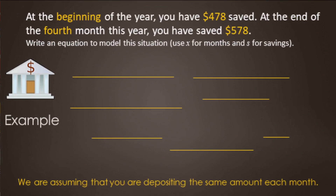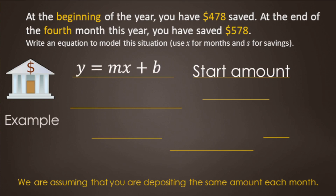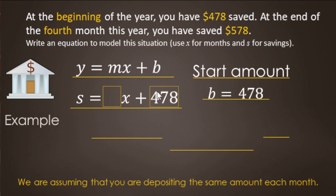We're going to be saving money and putting in the same amount each month. At the beginning of the year we have $478, and by the fourth month we have $578. We do have a start amount — start amounts and y-intercepts are basically the same thing — so we know we're going to use slope-intercept form. Here x represents months and S represents savings — savings is the dependent variable because it depends on the number of months. We find b, the start amount, which is $478 at the beginning of the year.